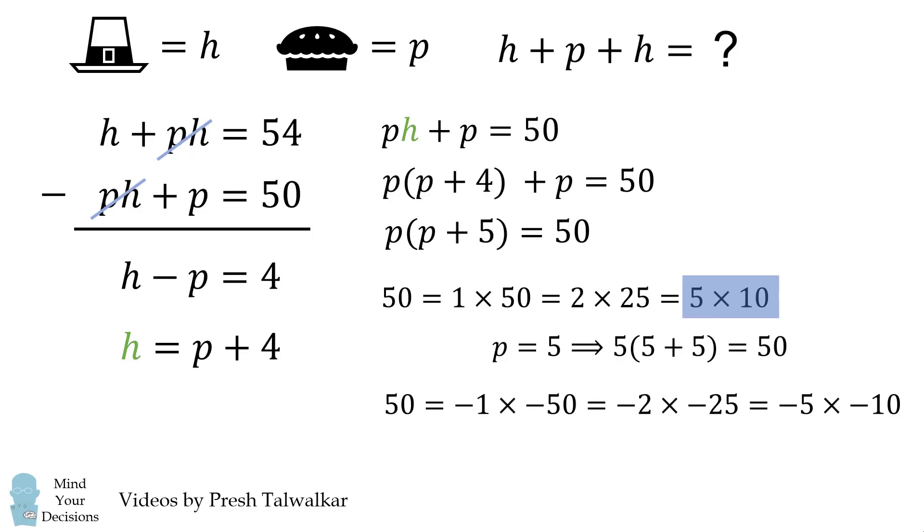Now again, we do have some factors that fit our characteristic of P and P plus 5. It'll be negative 5 times negative 10. But in this case, P will be equal to negative 10, and then P plus 5 will be equal to negative 5. But this will also get us to 50.